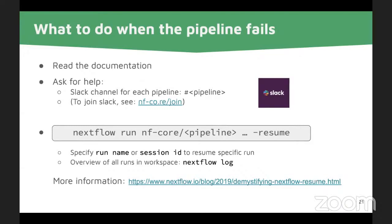Once you've fixed your issues and want to rerun without recomputing five days of work, Nextflow saves you with the `-resume` flag. Adding this to your run in the same work directory will resume the pipeline. If you don't want to resume the last run but a specific earlier one, you can type `-resume` with the run name or session ID. You get this by using `nextflow log`, which displays all the runs you've had in that work directory. There's also a blog entry going into more detail on this.